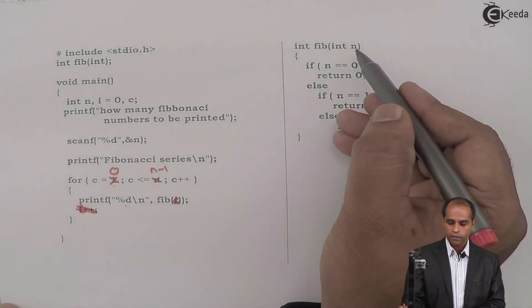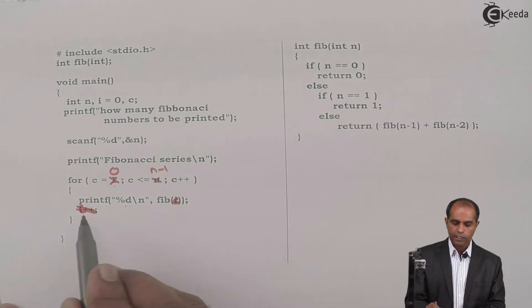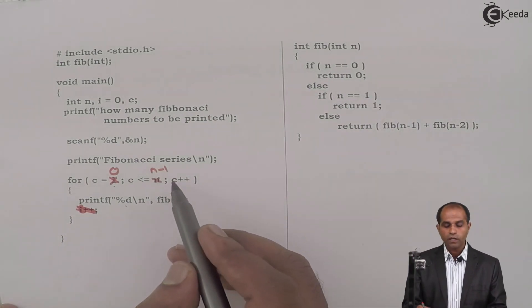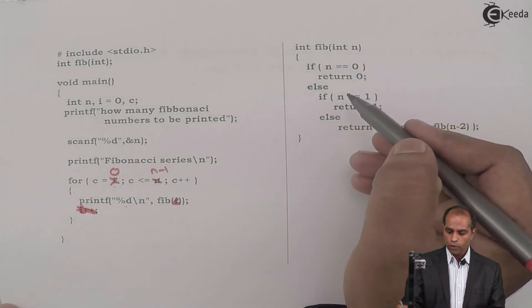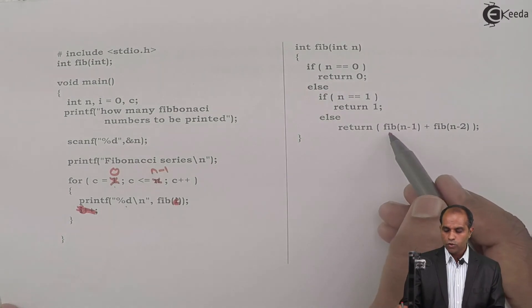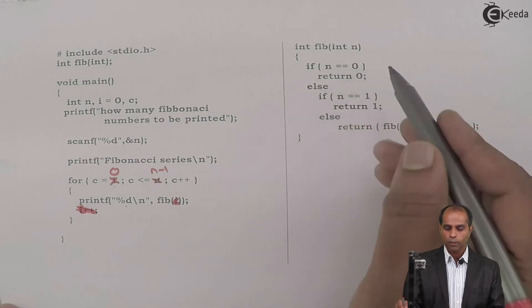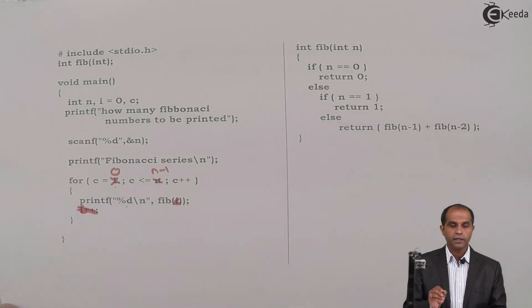Fib of 1. So 1 goes to this place. n equal to 0, no. 1 equal to 1, true. Return 1, that gets printed. When you go back, c becomes 2. So 2, then you pass through this. 2 equal to 0, no. 2 equal to 1, no. 2 minus 1 is 1, and 2 minus 2 is 0. So 1 gets copied and 2 gets copied. Again, the functions are called and these values are added and finally it returns.